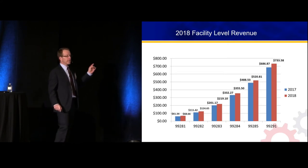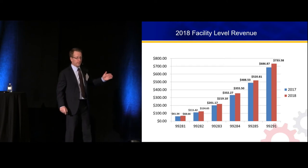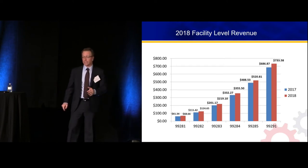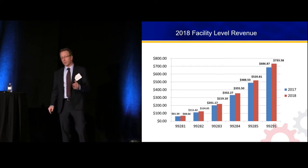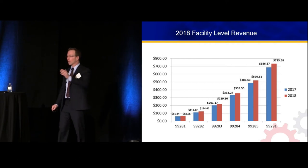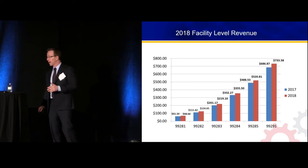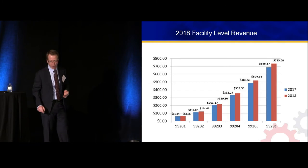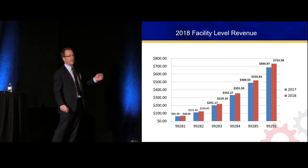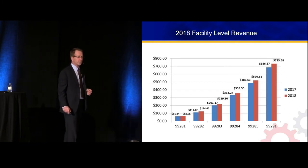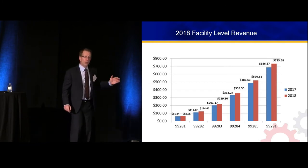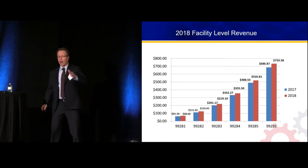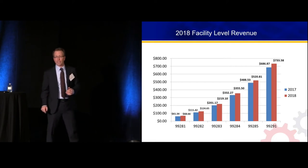If we look at the hospital payments — this is 2017 compared to 2018 — hospital payments at levels 1, 2, 3, 4, 5, critical care, paid using the same codes. They're paid much more than we are. Level 5 in 2018: $520.81. Those payments for each ED facility level are going up a little bit each year.